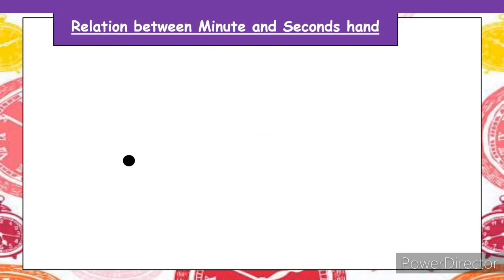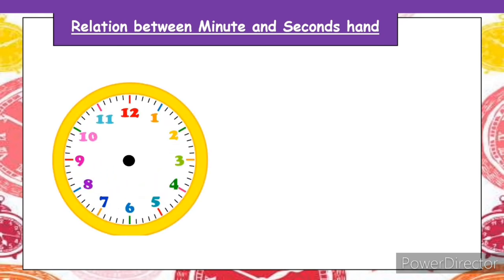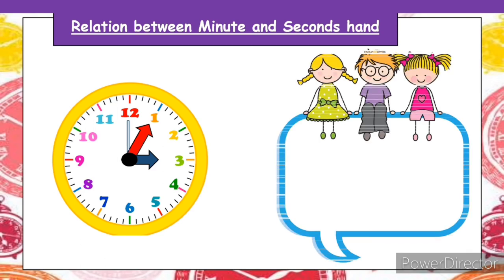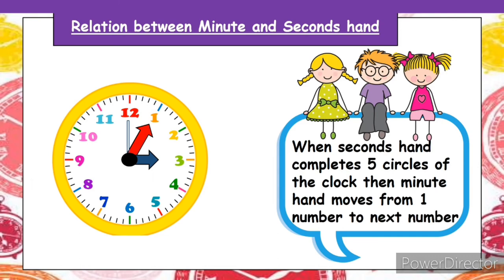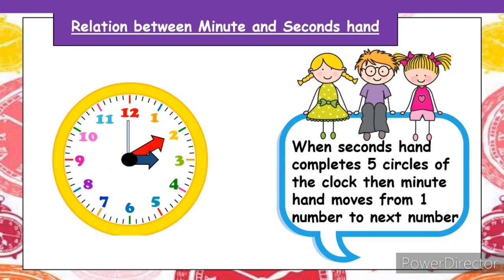Now we are going to study the relationship between the minute hand and the second hand. You can see the dial of the clock having all three hands: minute hand, hour hand, and second hand. When the second hand completes five full circles of the clock, the minute hand moves from one number to the next number. First round, second round, third round, fourth round, and the fifth round — once the second hand has taken five rounds, the minute hand has moved from one number to the next.